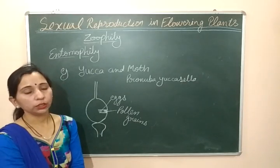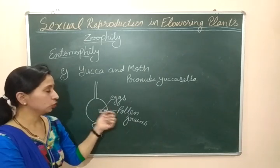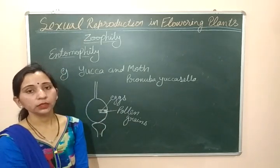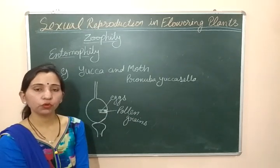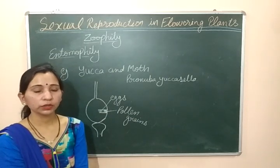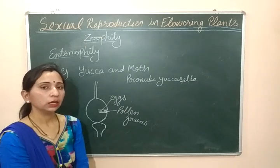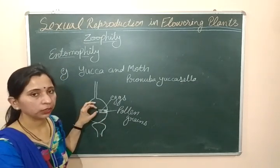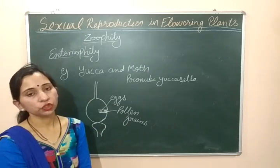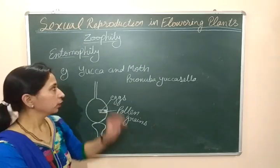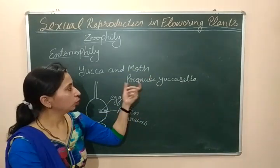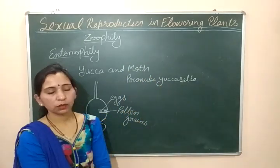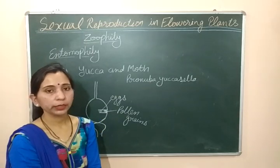The moth has a safe place for laying its eggs, and these eggs can easily grow into larvae by taking food from inside the ovary. So this is a very important mutual association between the yucca flower and the moth. The name of the moth is Pronuba moth — Pronuba yuccasella is the complete technical name. It is a very important example.